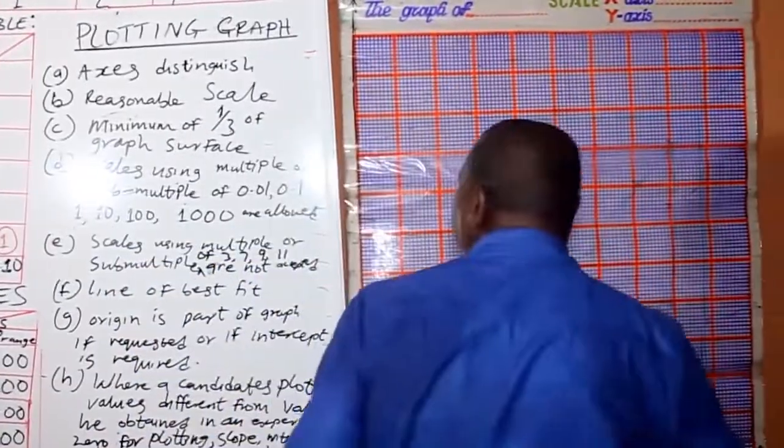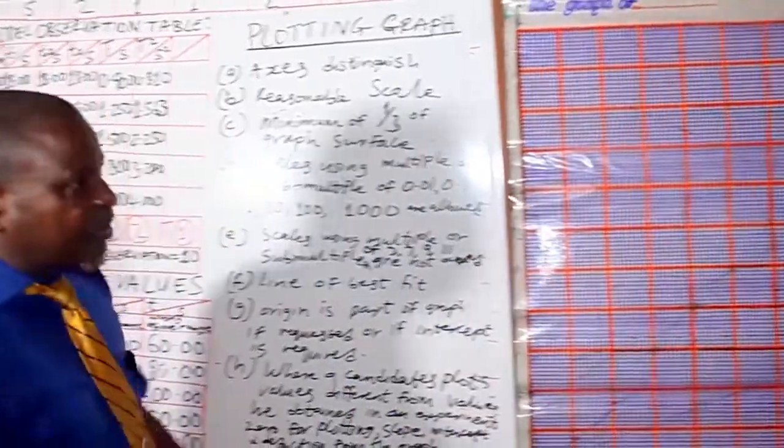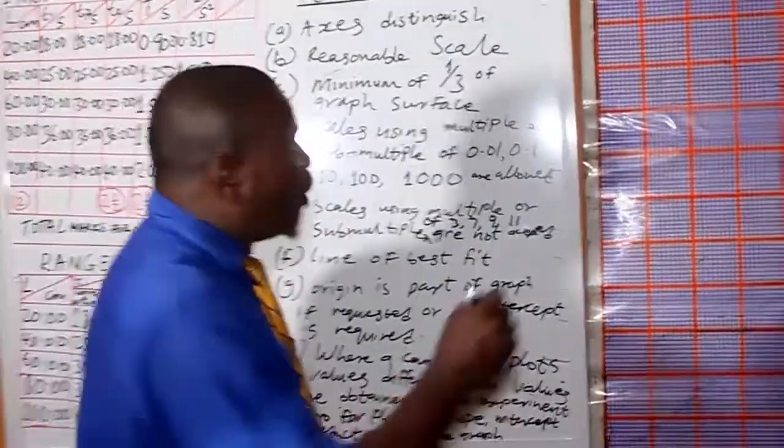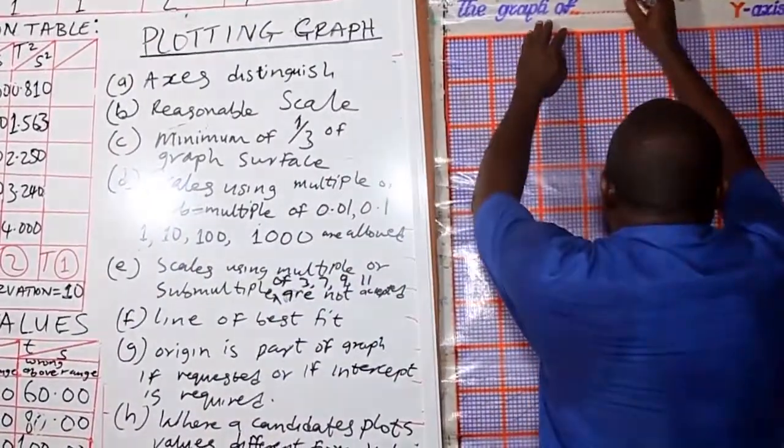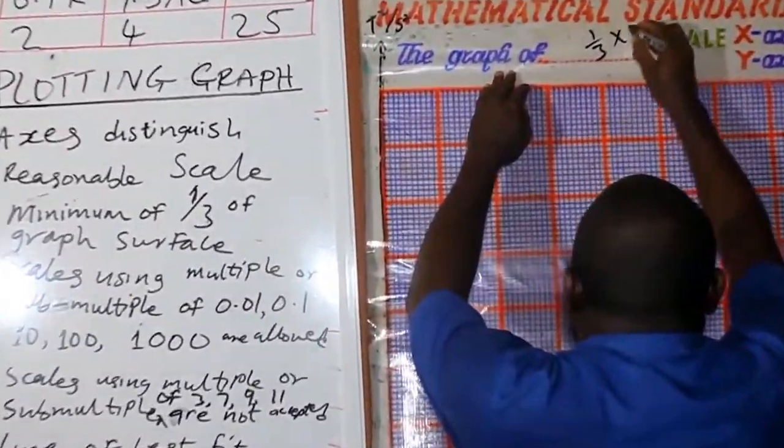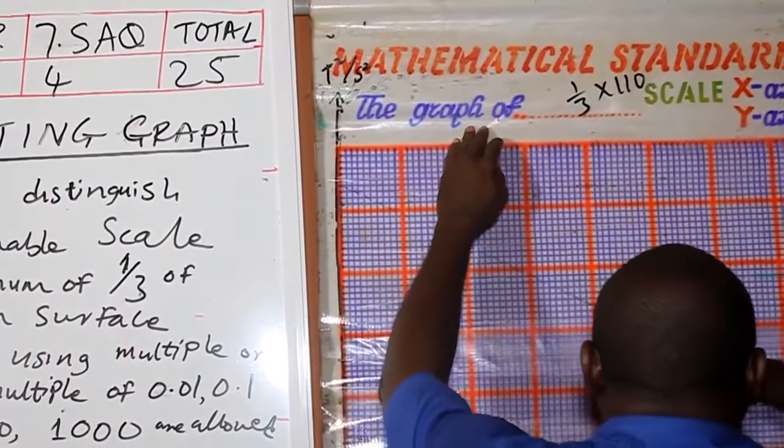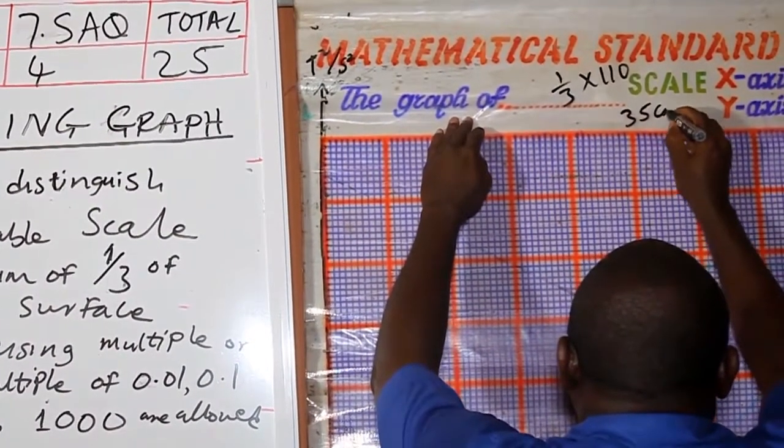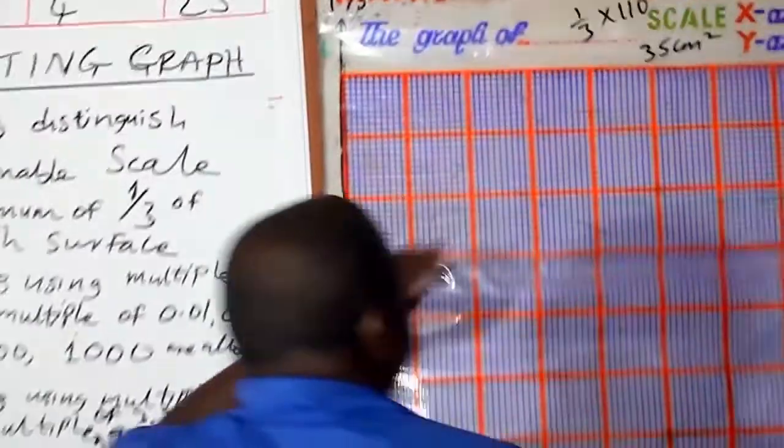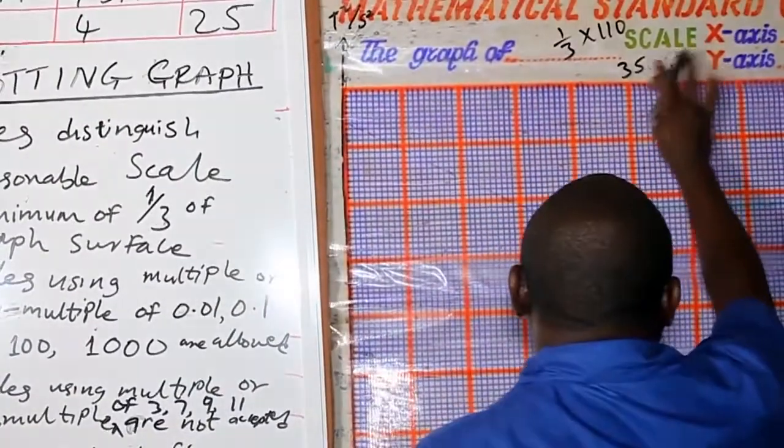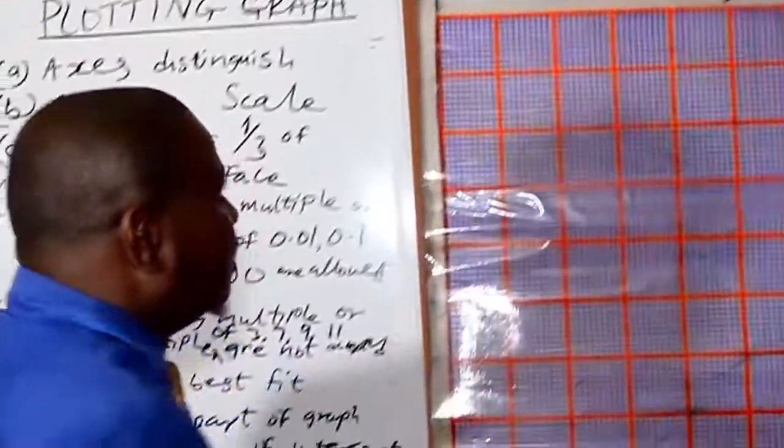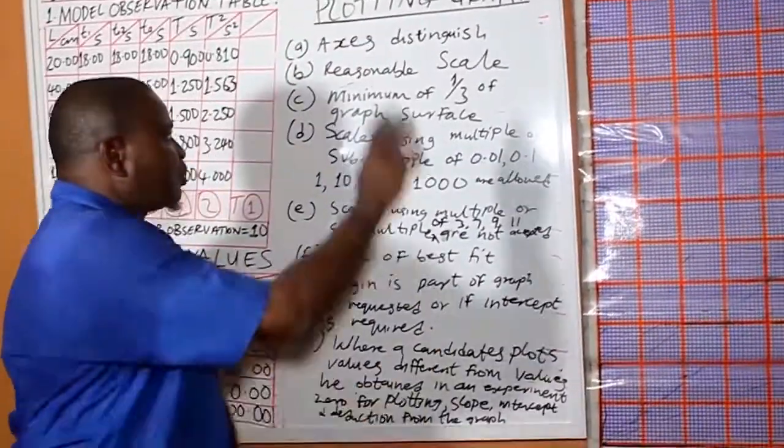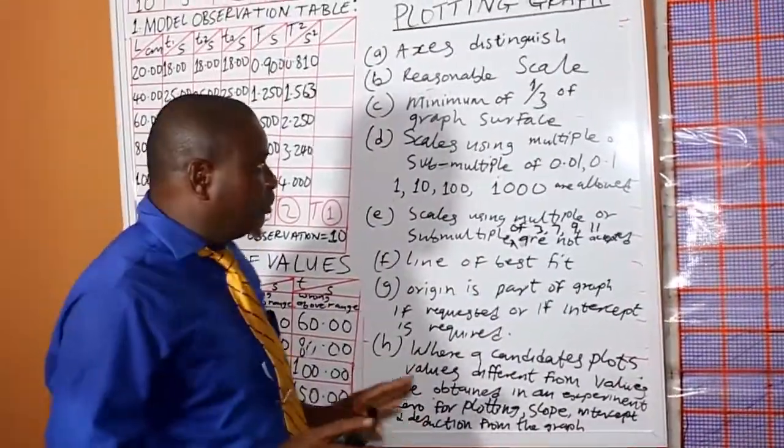So let's see. 11 times 7 will give us one-third. So one-third of one-third, which is around 35 centimeters square. So that is one-third of the graph surface. It needs more than that, but that is minimum.